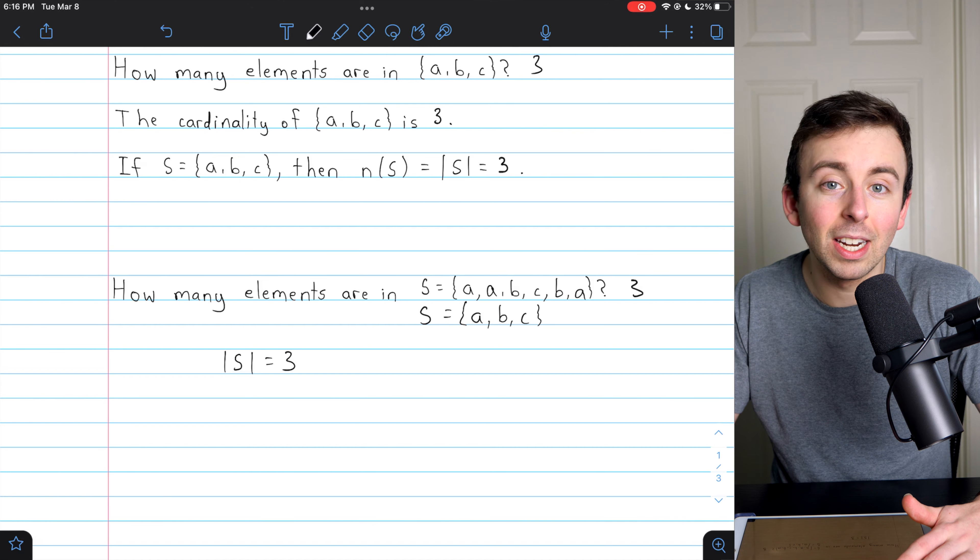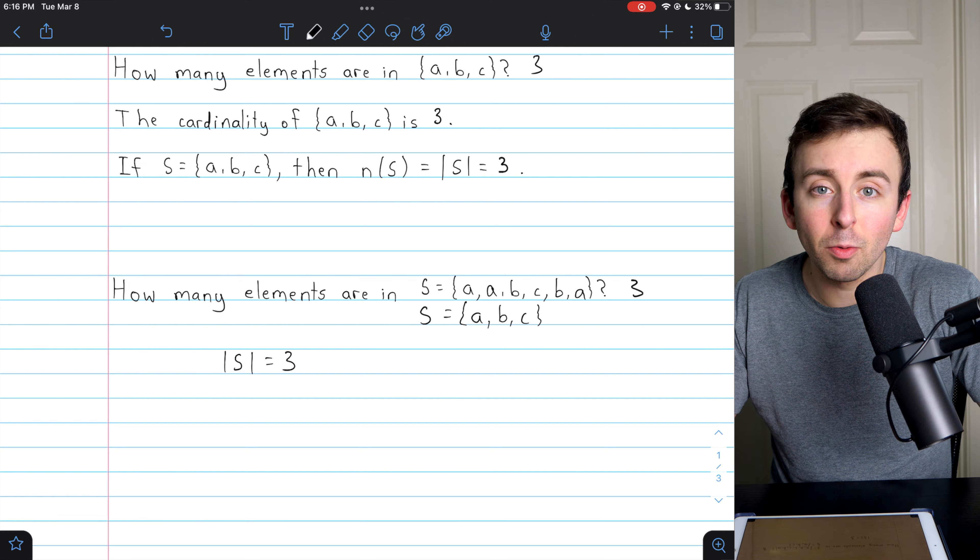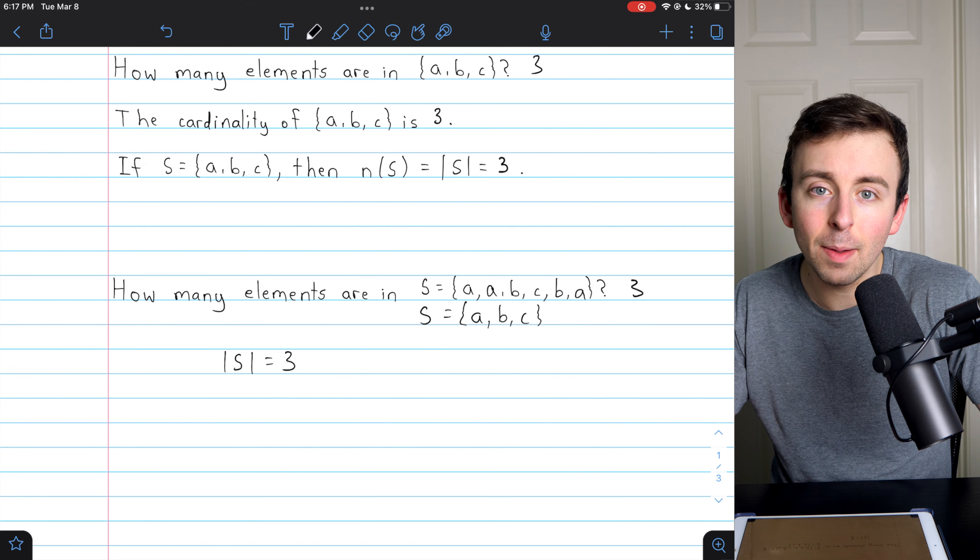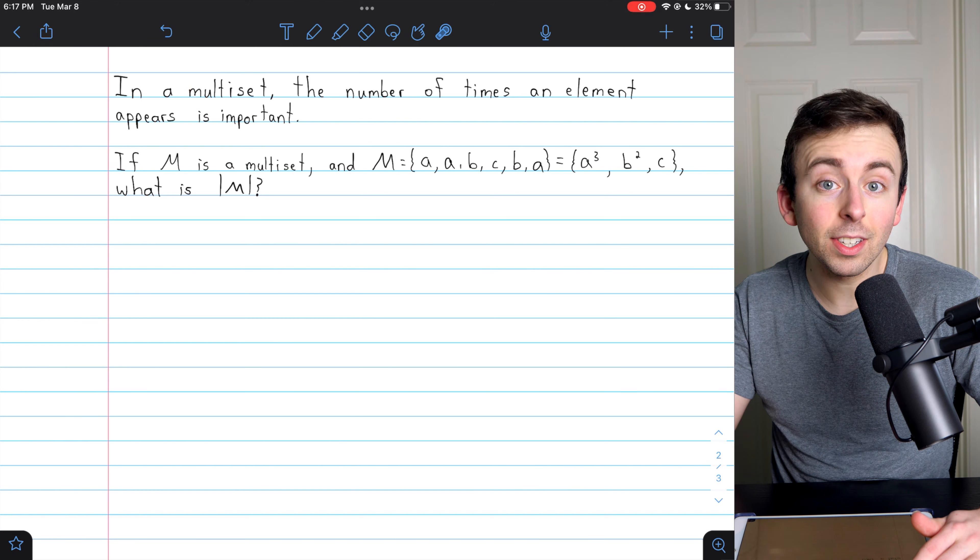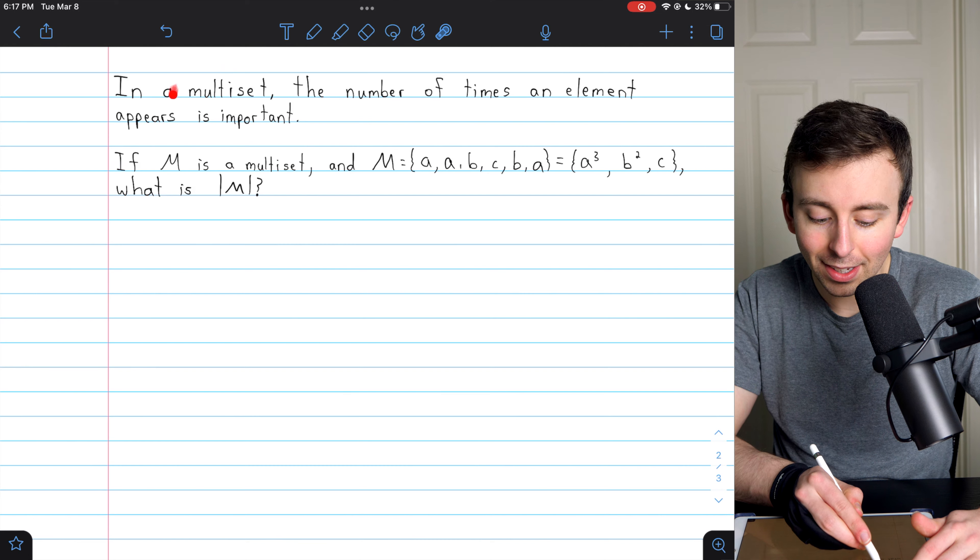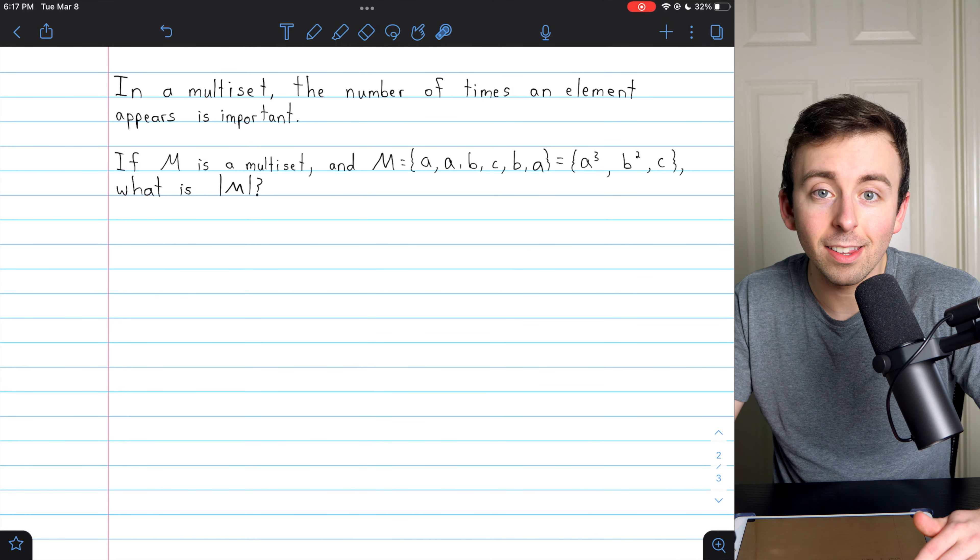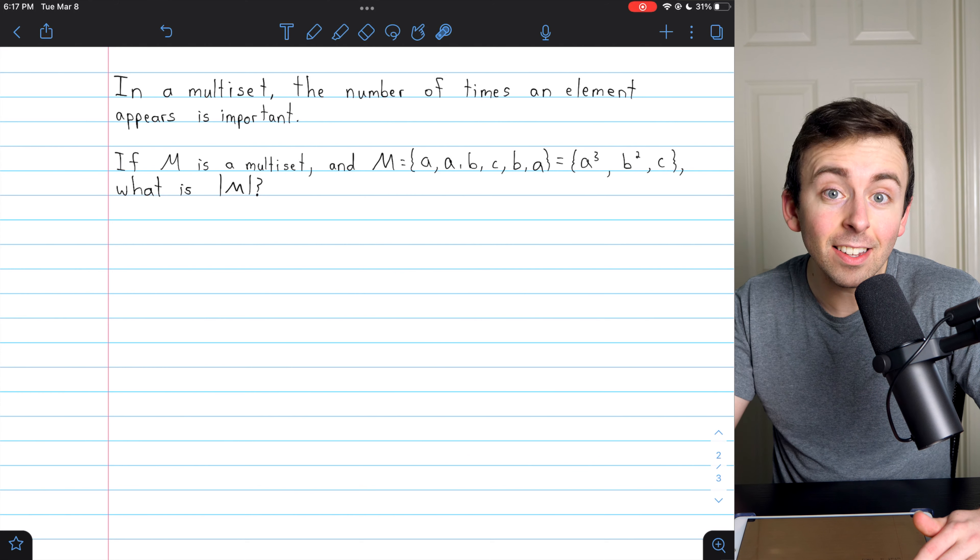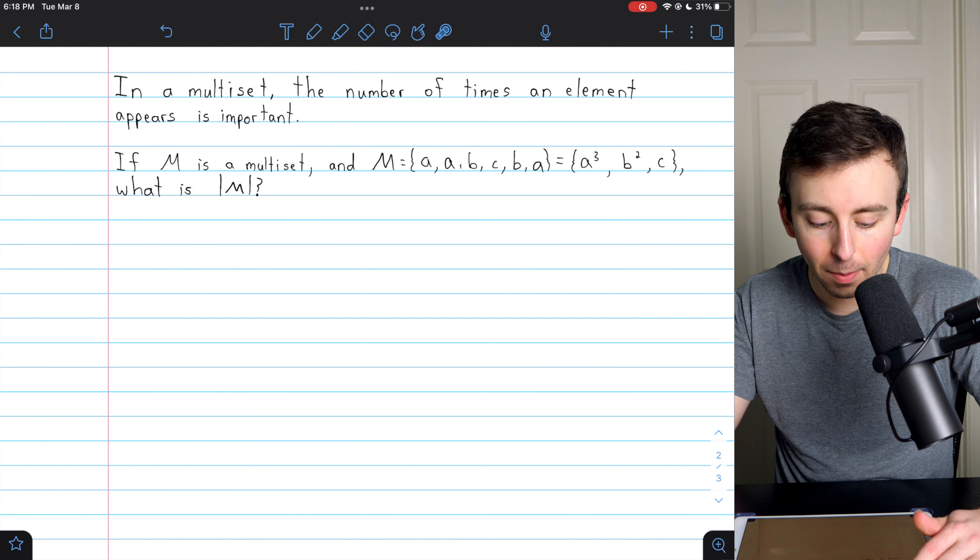Sets do not distinguish between an element occurring once or multiple times. So why would we ever write a set with elements being repeated? Well, if we write an element multiple times, perhaps we're talking about a multiset. So this is a different type of object. It's not a set. It's something different. It's a multiset. I don't want to tell you all about multisets in this video. I just want you to understand that they exist. In a multiset, the number of times an element appears is important, and so that would impact the cardinality of a multiset.